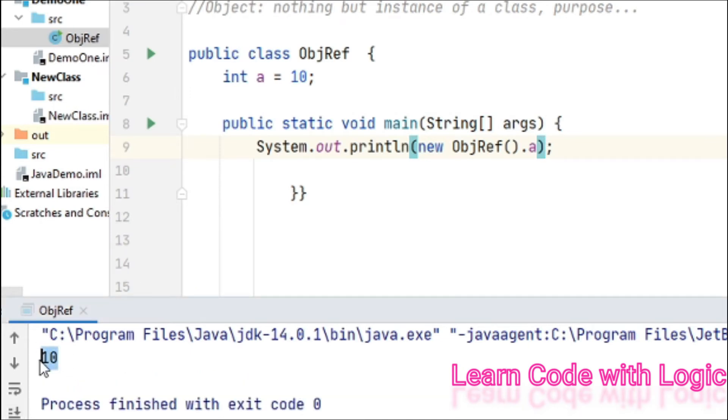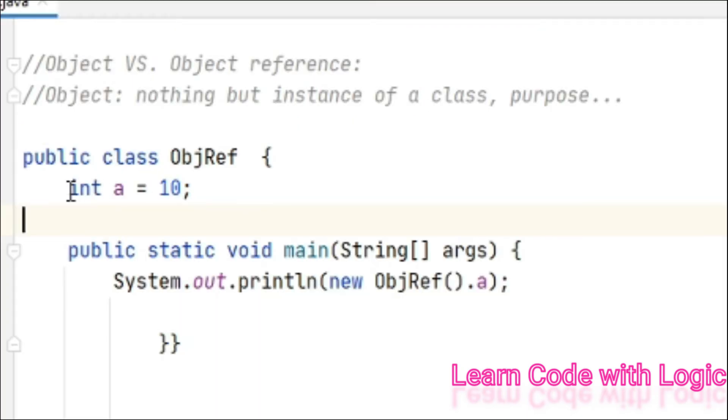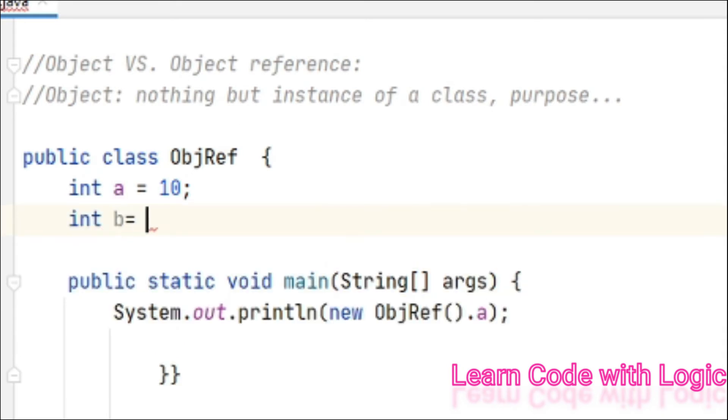It prints the a value. So far it's clear, right? We created one instance variable and one object, and using that object we access the variable. Suppose you have one more variable here.